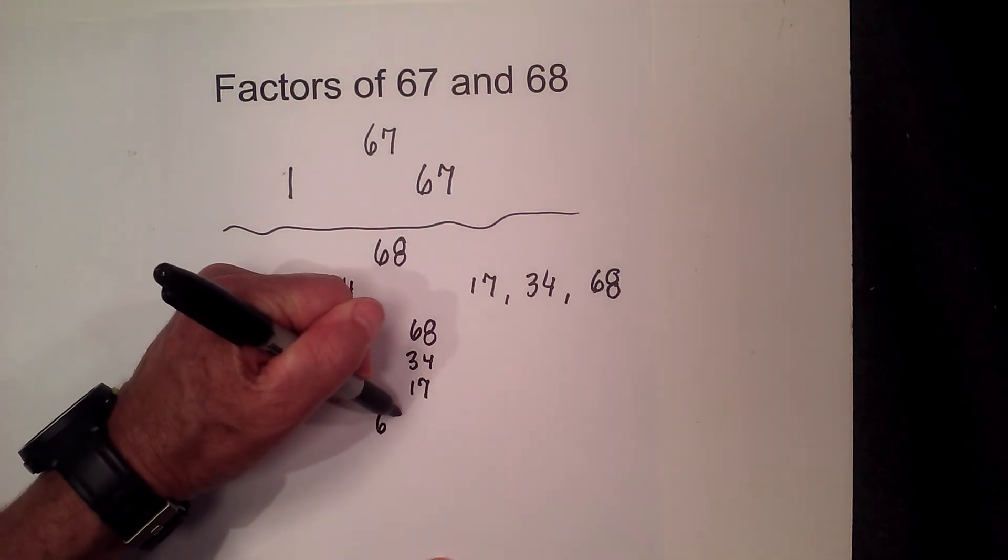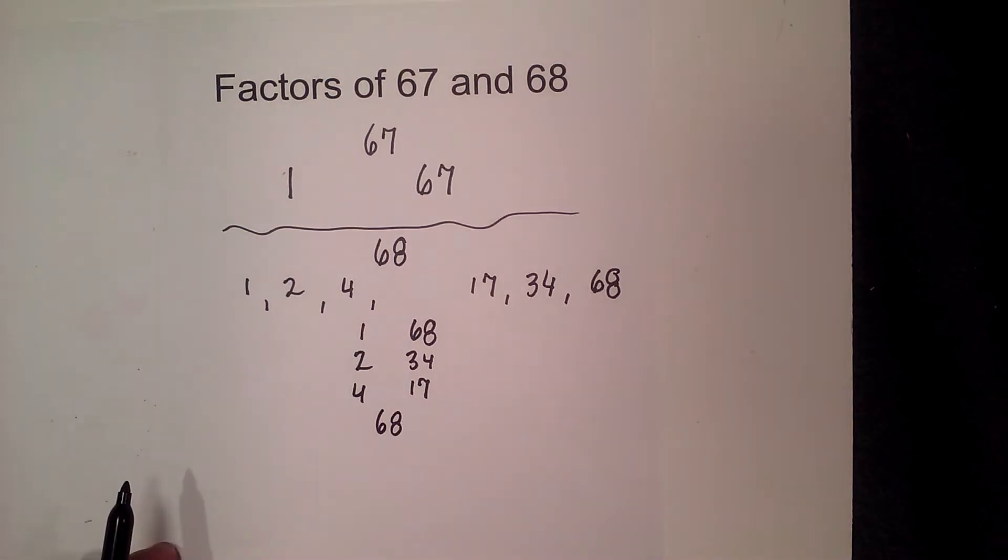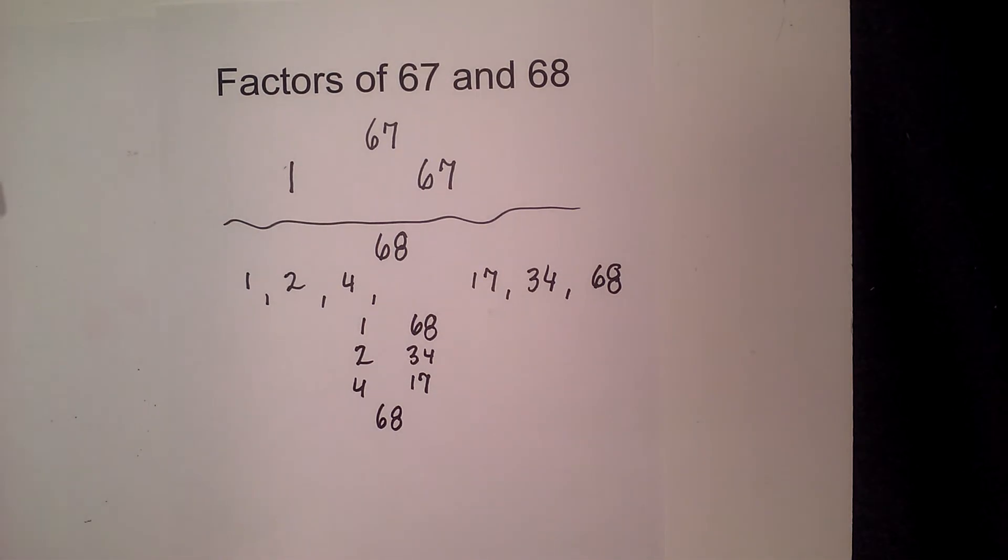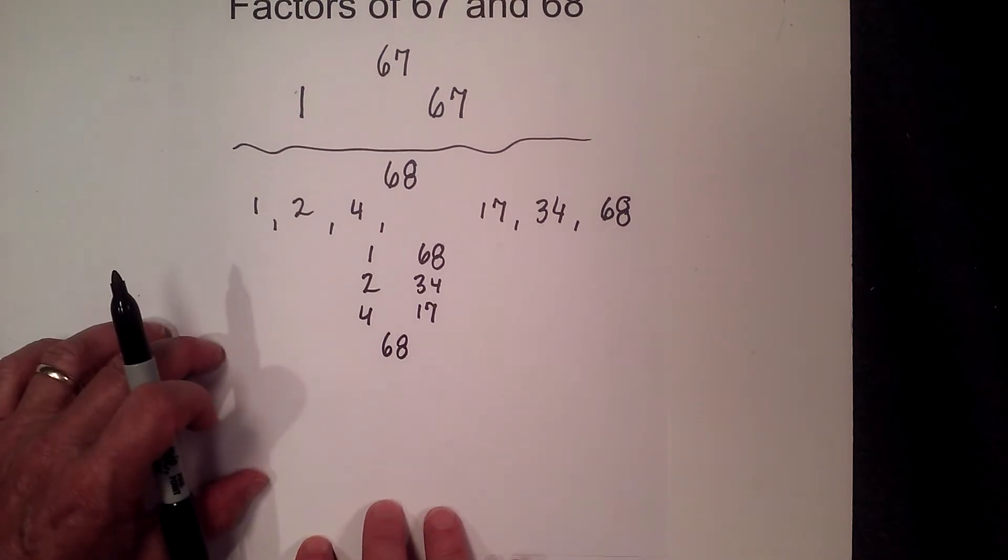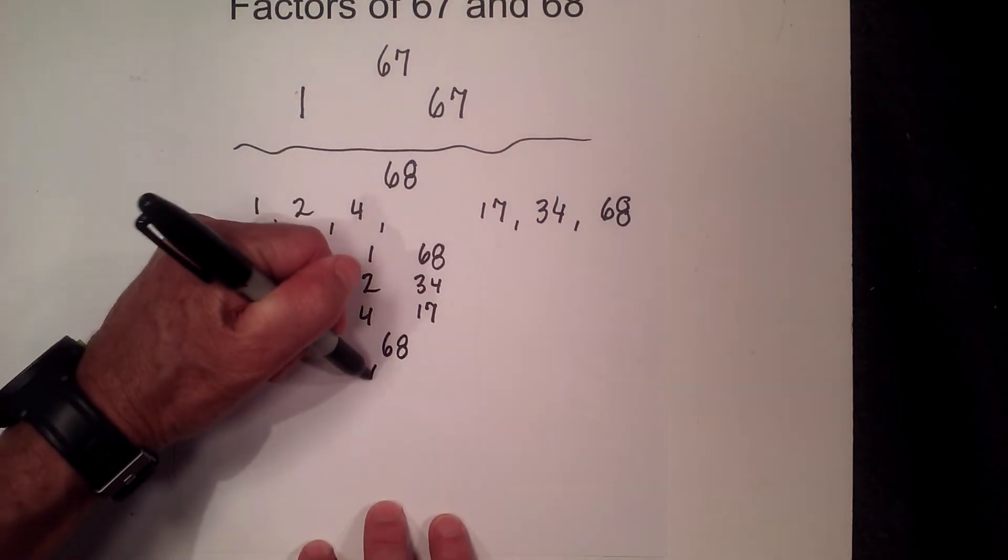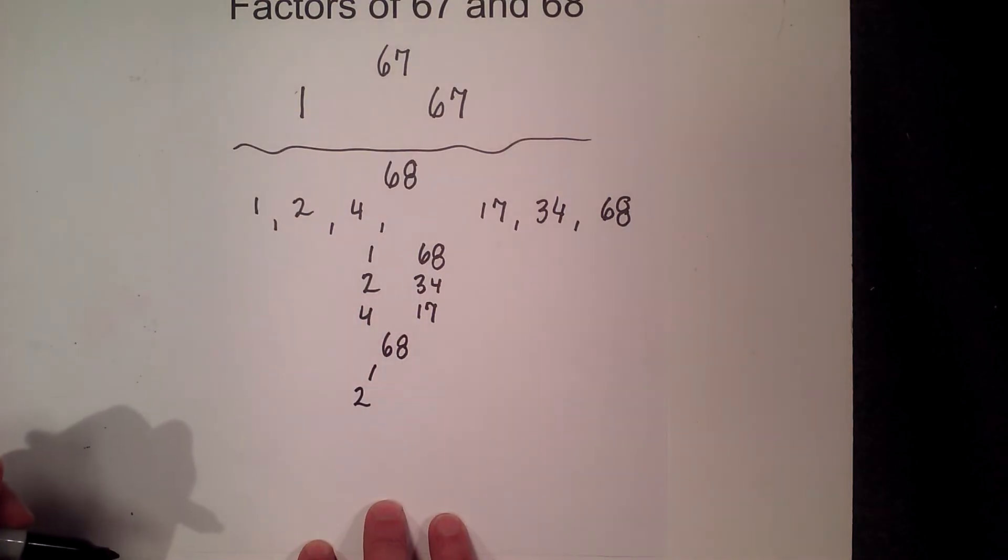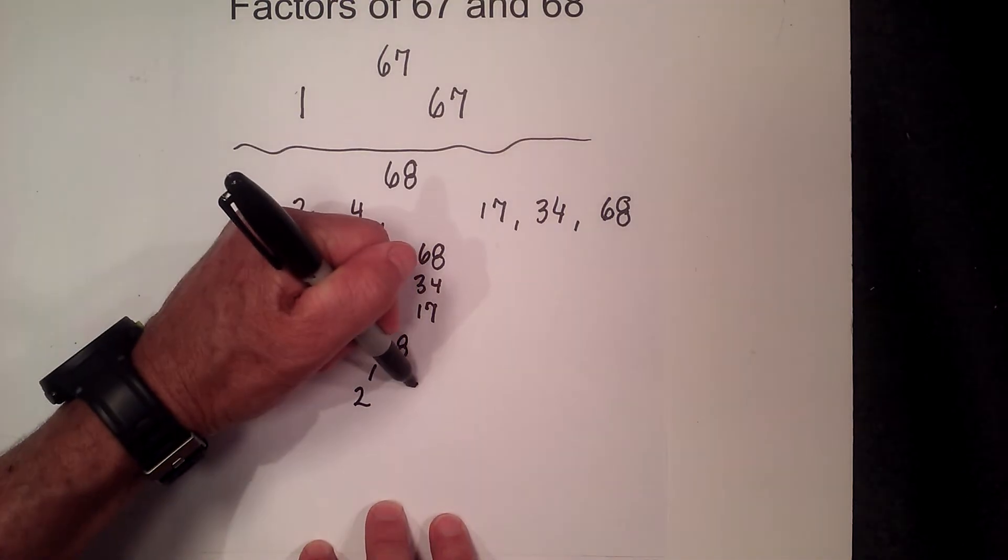Now to find the prime factors, let's complete a factor tree. Let me move this up just a little bit so it's still on the sheet of paper, and we can start with 2 times 34.